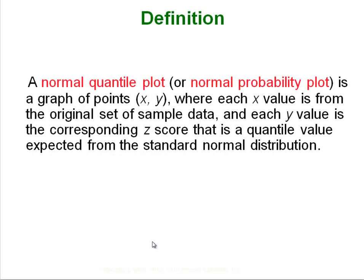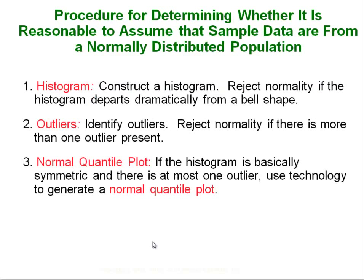A normal quantile plot is very similar to a scatter plot. It is a bunch of dots on the screen, and then there is a straight line, and all you are doing is assessing the pattern of those dots. Each x, y pair is the data value — x is your original piece of data and y is the corresponding z-score from that data value. You are looking at whether your sample comes from a population that has a normal distribution.